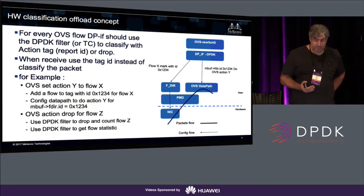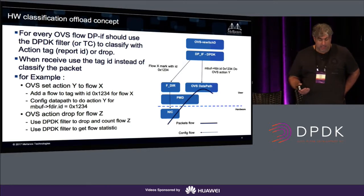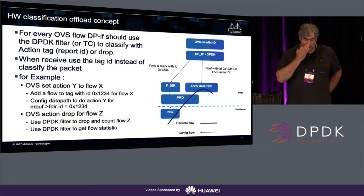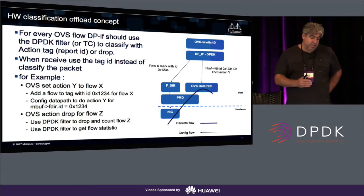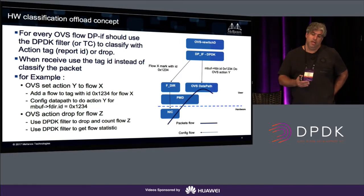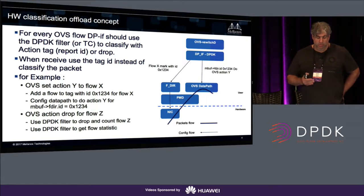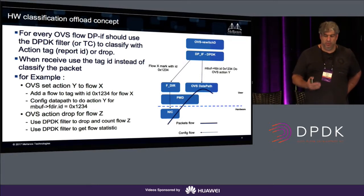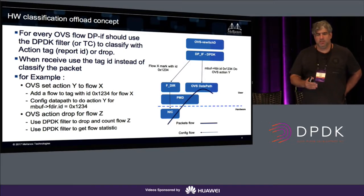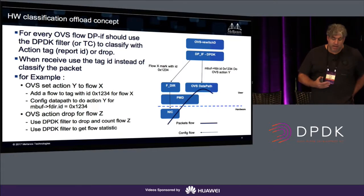The same can be done for dropping packets — for example, to handle a DDoS attack. The difference there is that you don't want the packet to reach the software at all, so you don't need a flow tag. But you do want the drops to be counted, because you want to maintain the number of packets dropped in hardware since you can't count them in software.